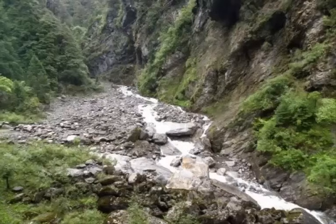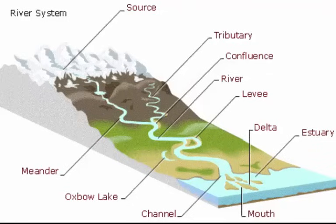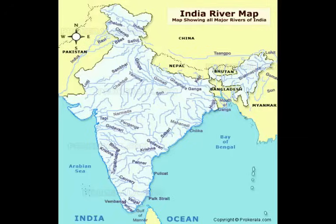In this chapter we will read about where the rivers originate from, what are the shapes of the river, how did they get that shape, where do they drain into, and why are rivers draining into the western side and eastern side.